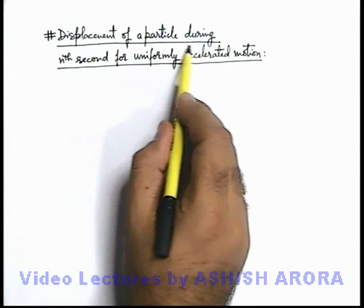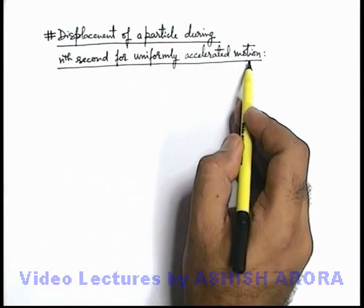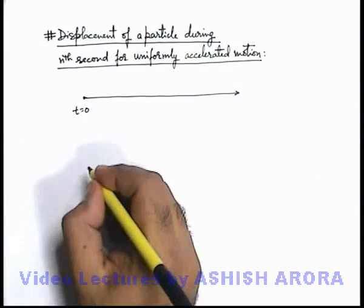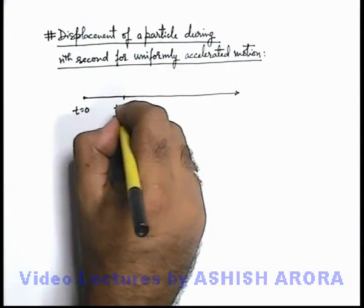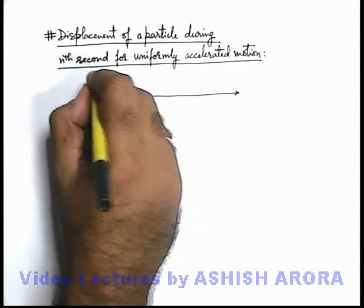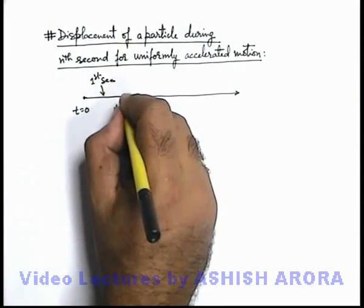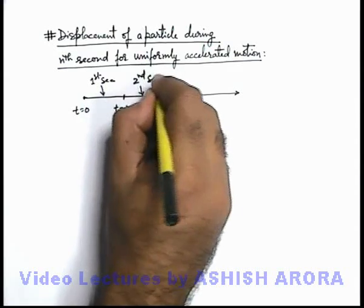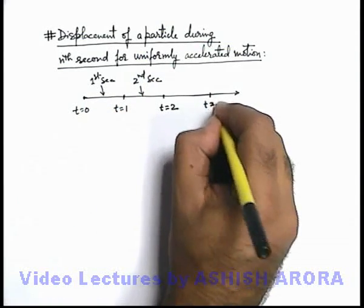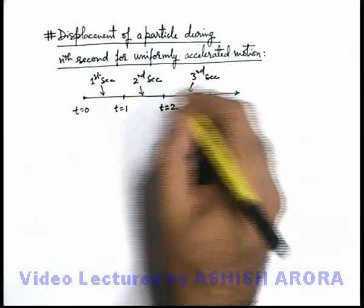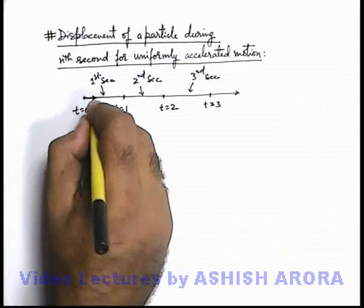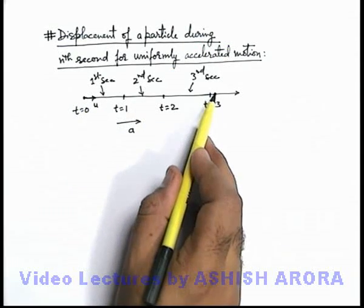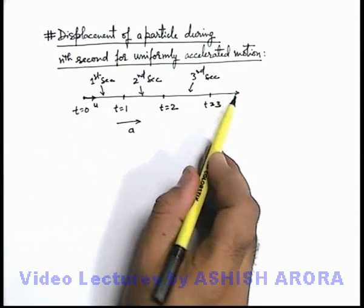Let's discuss the displacement of a particle during the nth second for uniformly accelerated motion. The time from t = 0 to t = 1 s is the first second of motion; from t = 1 to t = 2 s is the second second of motion; from t = 2 to t = 3 s is the third second of motion. If a particle starts with initial speed u and accelerates with acceleration a, its velocity is gradually increasing, so in a later one-second duration the particle covers more displacement compared to an earlier one-second duration.